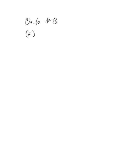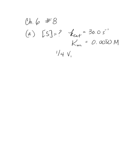The first part of the problem, in A, you're asked: at what substrate concentration would an enzyme with a Kcat of 30 per second and a Km of 0.0050 molar operate at one quarter of its maximum rate? The maximum rate is Vmax. So to do this problem, I'm going to convert that into 0.25 Vmax. We're trying to solve for what initial velocity will get us at a quarter of Vmax.